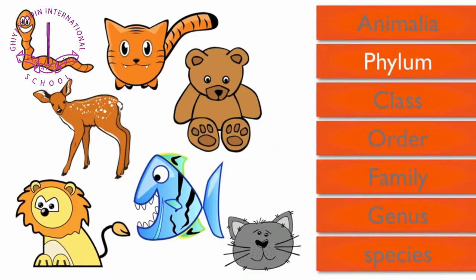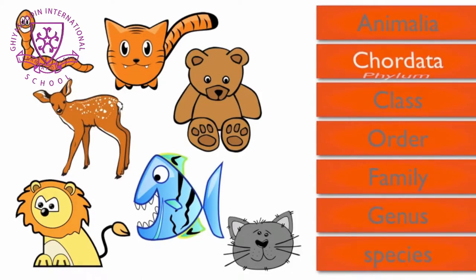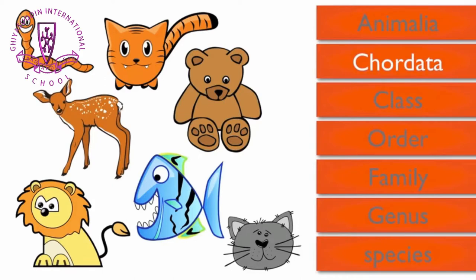The phylum the lion fits into is called Chordata. This group includes animals that have a backbone. We can eliminate the worm from the group since they lack a backbone.